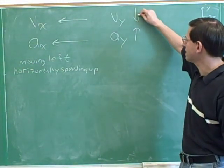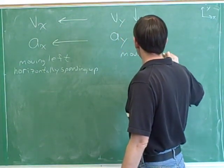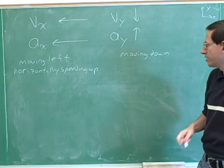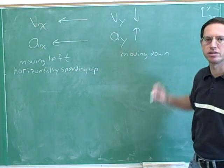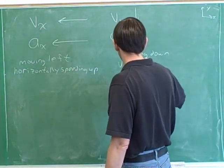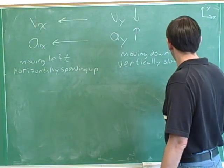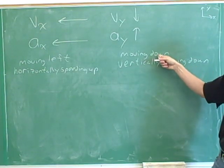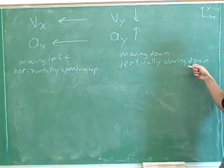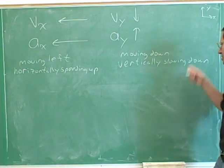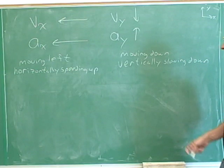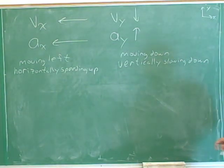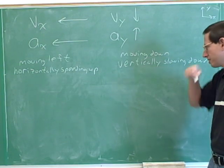The vertical velocity is downward, so we're moving down. Remember, it's the velocity that tells you which way you're moving, not the acceleration. The vertical acceleration is anti-parallel to the vertical velocity, so vertically we're slowing down. Notice that the word 'down' here means something different: the first 'down' refers to the direction of motion, while the second 'down' just means we're not moving as fast as we used to — the vertical speed is decreasing.